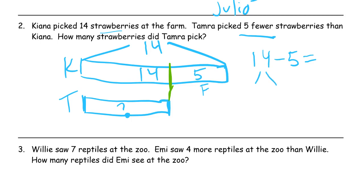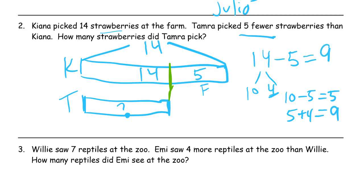How am I going to subtract it? I can take from ten — what's ten minus five? That's five. Then add the other part back in: five plus four is nine. So that's nine. And now I just need my sentence: Tamara picked. Remember, this is the question mark right here — that's the part that shows you what you're trying to solve for. The picture should summarize the question.